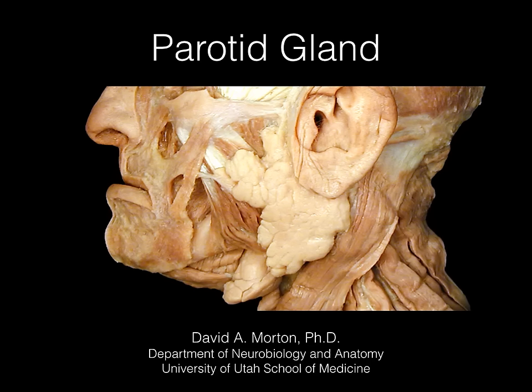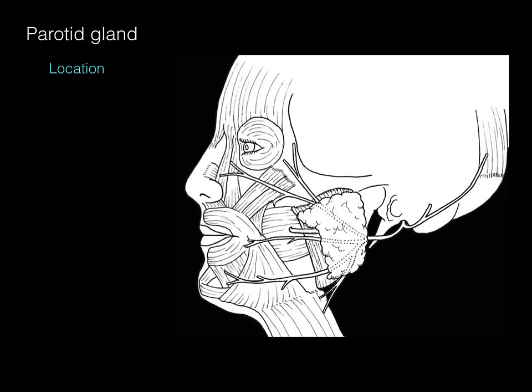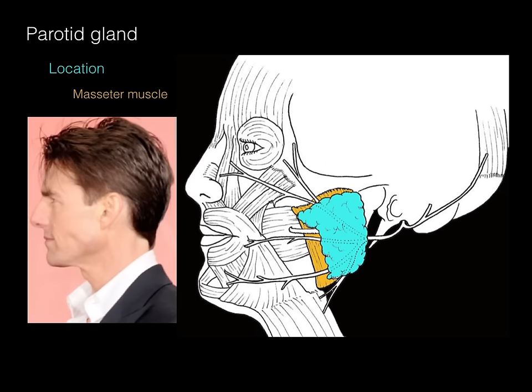The parotid gland is located on the superficial face, sitting right on top of the masseter muscle. The masseter is one of the principal muscles of mastication, and when you clench the jaw — as Tom Cruise does in many of his movies — the clenching masseter pushes the parotid gland out, forming a little bulge on the side of the ramus of the mandible.